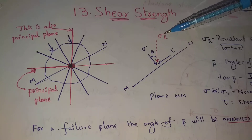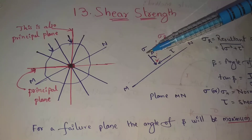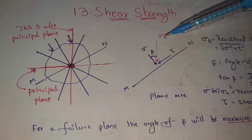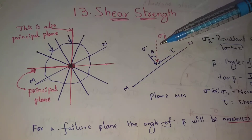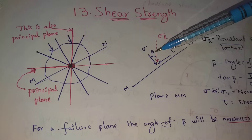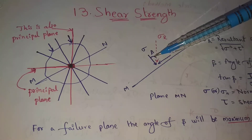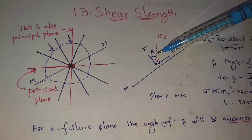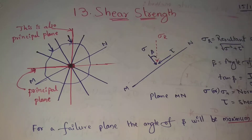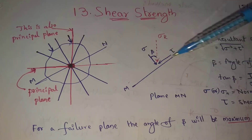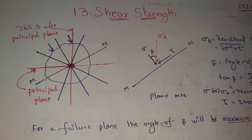The resultant stress acts at some angle with the normal stress. This angle is called beta — the angle of obliquity. The formula is: tan beta equals Tau divided by Sigma.